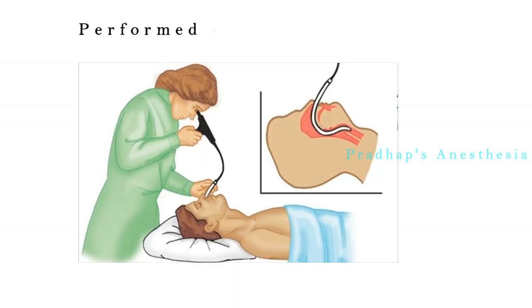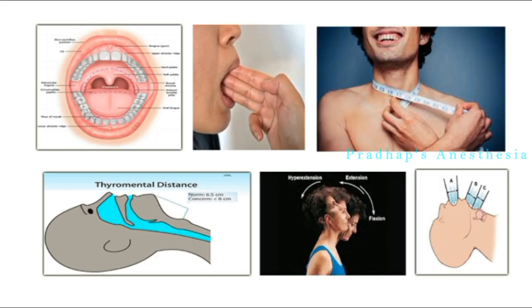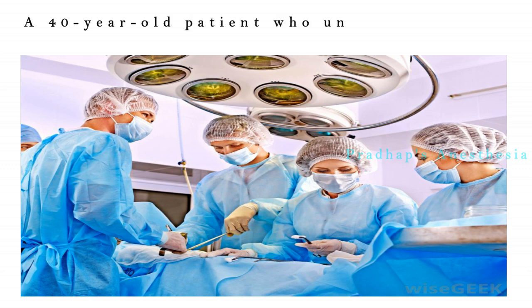Fiber optic nasotracheal intubation is performed if it is difficult to open the mouth, or if intubation using a laryngoscope is expected to be difficult. Fiber optic intubation is a very useful technique for patients with an anticipated difficult airway, such as those with reduced mouth opening due to infection, temporomandibular joint problems, or jaw fracture.